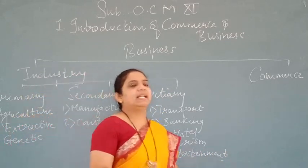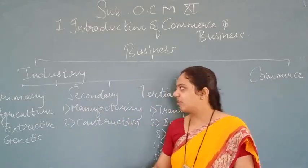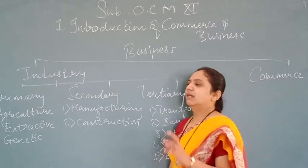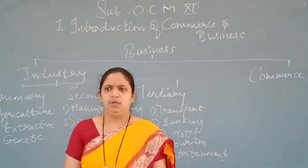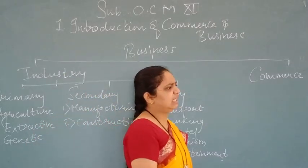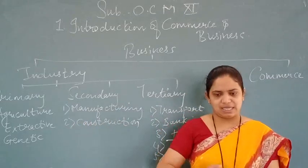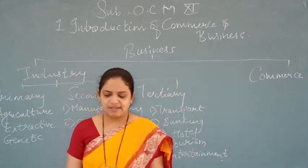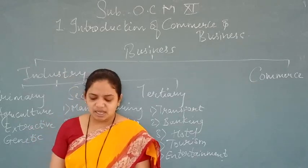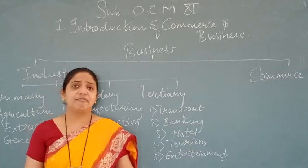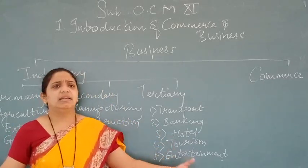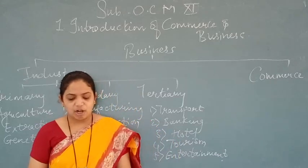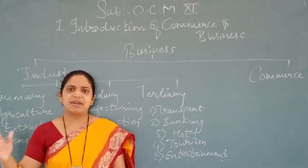Business activities are broadly classified into two big parts: industry and commerce. First I will teach you the industry part. Industry is such a one where raw materials are collected and converted into the finished product, and then it comes to the market. Industry implies economic activity associated with the conversion of resources into goods that are ready for use.